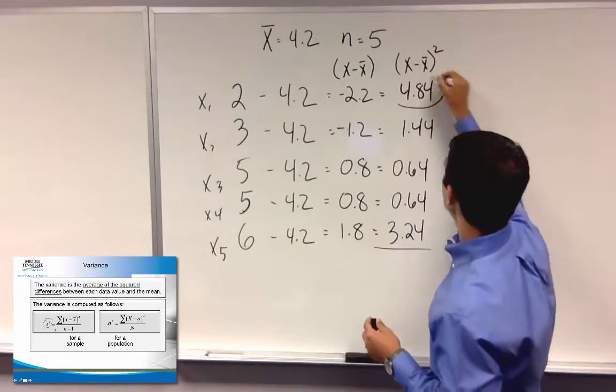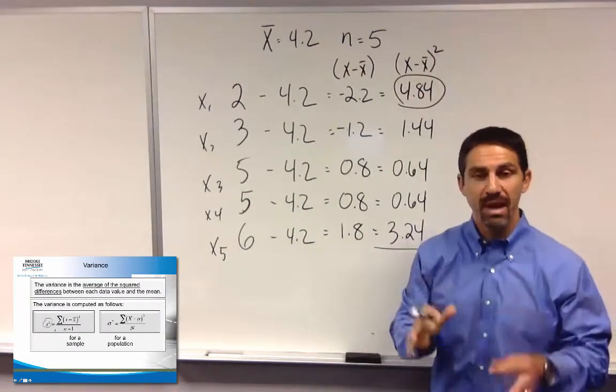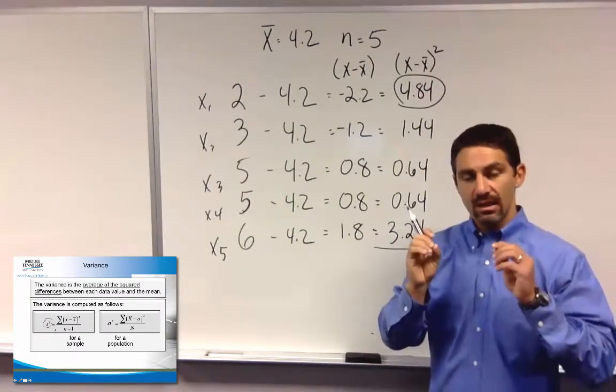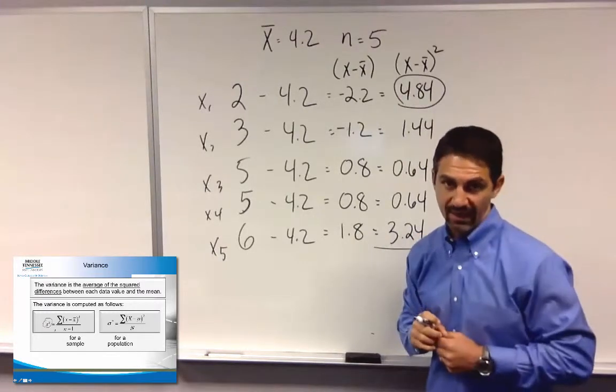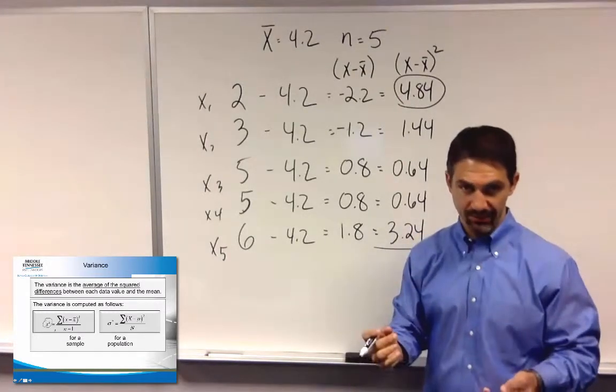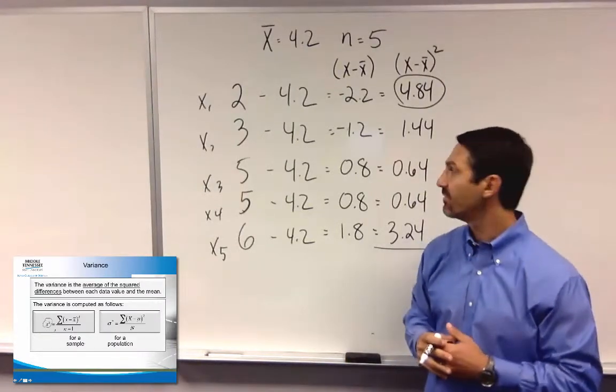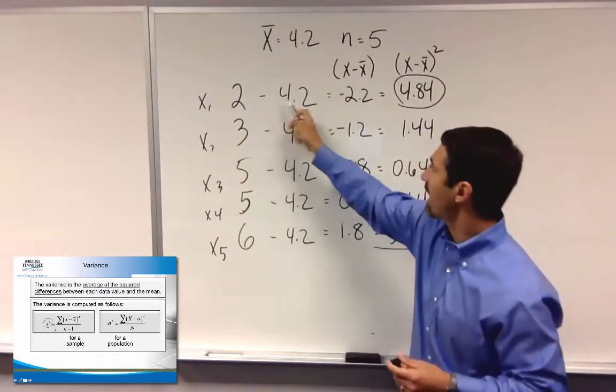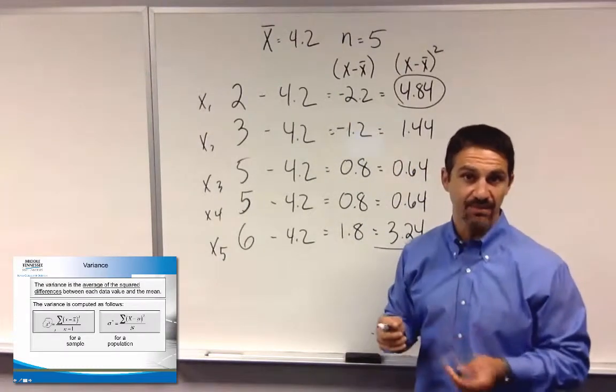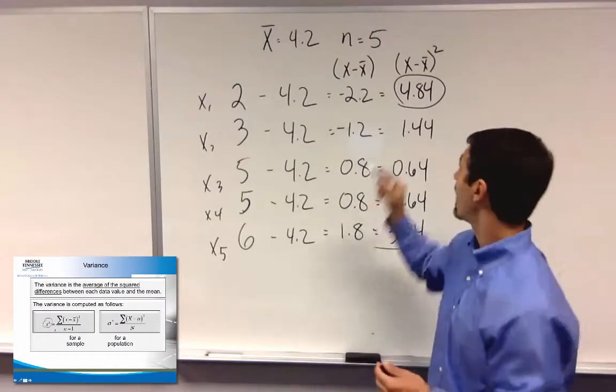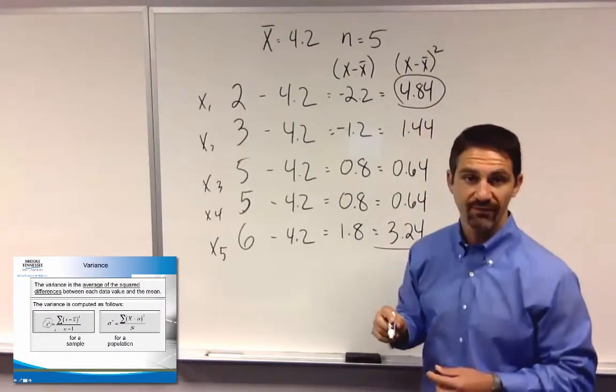And then if I square that value, it gives me this right here. Remember, every time you square a negative value, it becomes positive. Because multiplying a negative times a negative gives you a positive value. So 2 minus 4.2 is the x minus x bar. Square that value gives you 4.84.